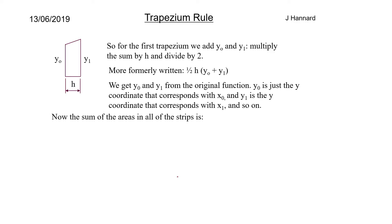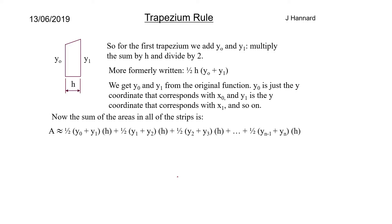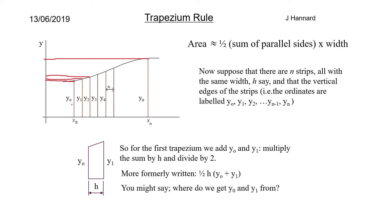The sum of the areas of all the strips is: ½(y₀ + y₁)H + ½(y₁ + y₂)H + ½(y₂ + y₃)H, all the way up to ½(yₙ₋₁ + yₙ)H. We apply the trapezium area formula to each individual strip and then add them all up.